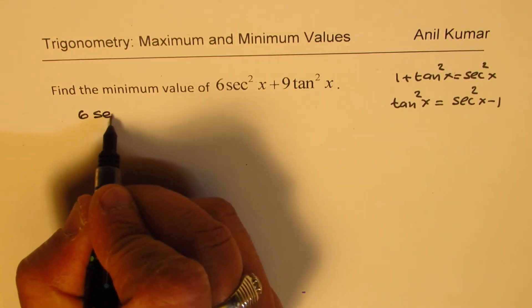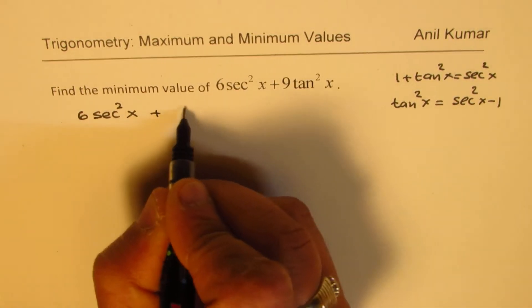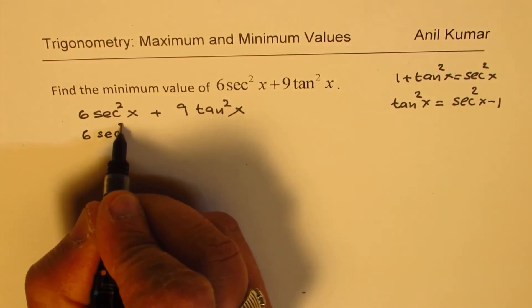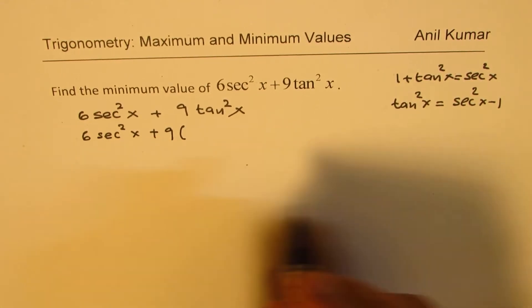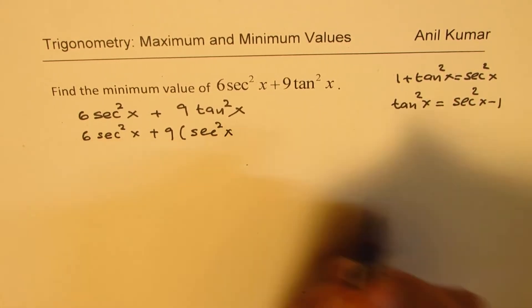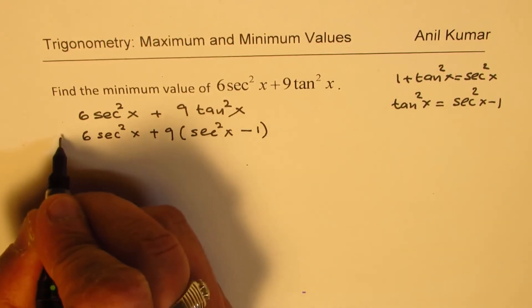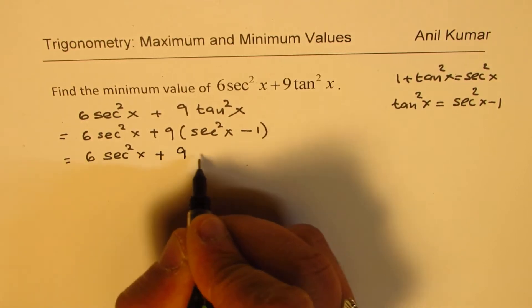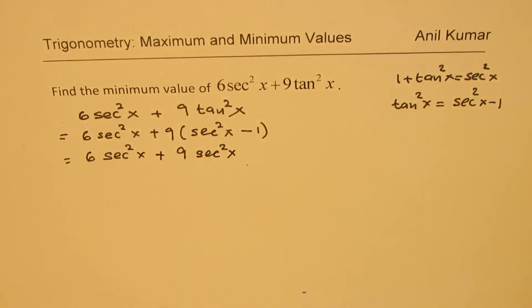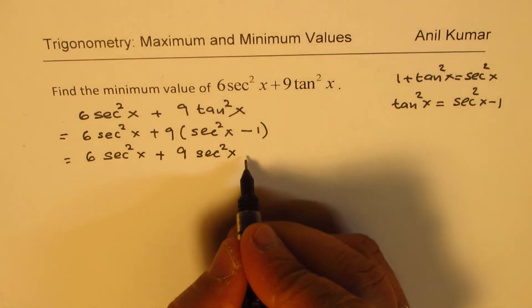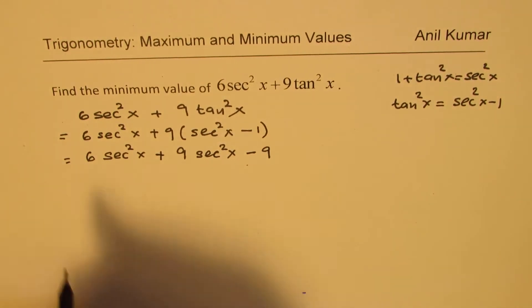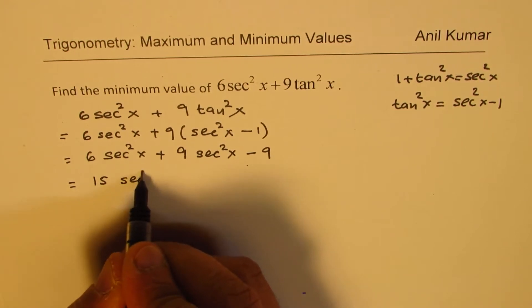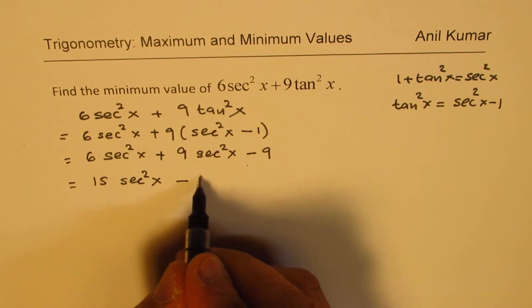Let's make the substitution. The question is 6 secant squared x plus 9 tan squared x. It becomes 6 secant squared x plus 9 times (secant squared x minus 1), which you can write as 6 secant squared x plus 9 secant squared x minus 9. That gives you 15 secant squared x minus 9.